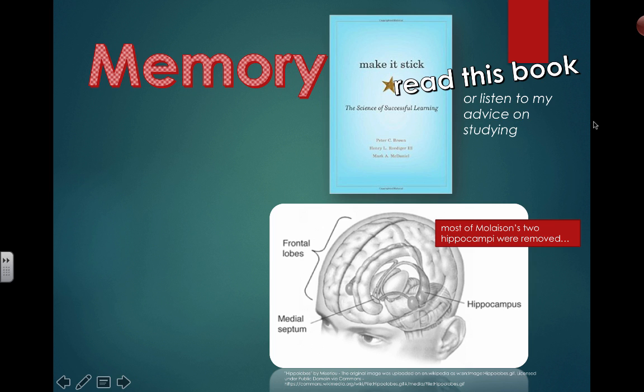Memories can take us back. They can make us sad. All this stuff that sticks in our brain comes from synapses forming. Memories that we don't use can end up disappearing — that's called neural pruning, where synapses can disappear and actual neurons can break down if you don't need some of those connections.